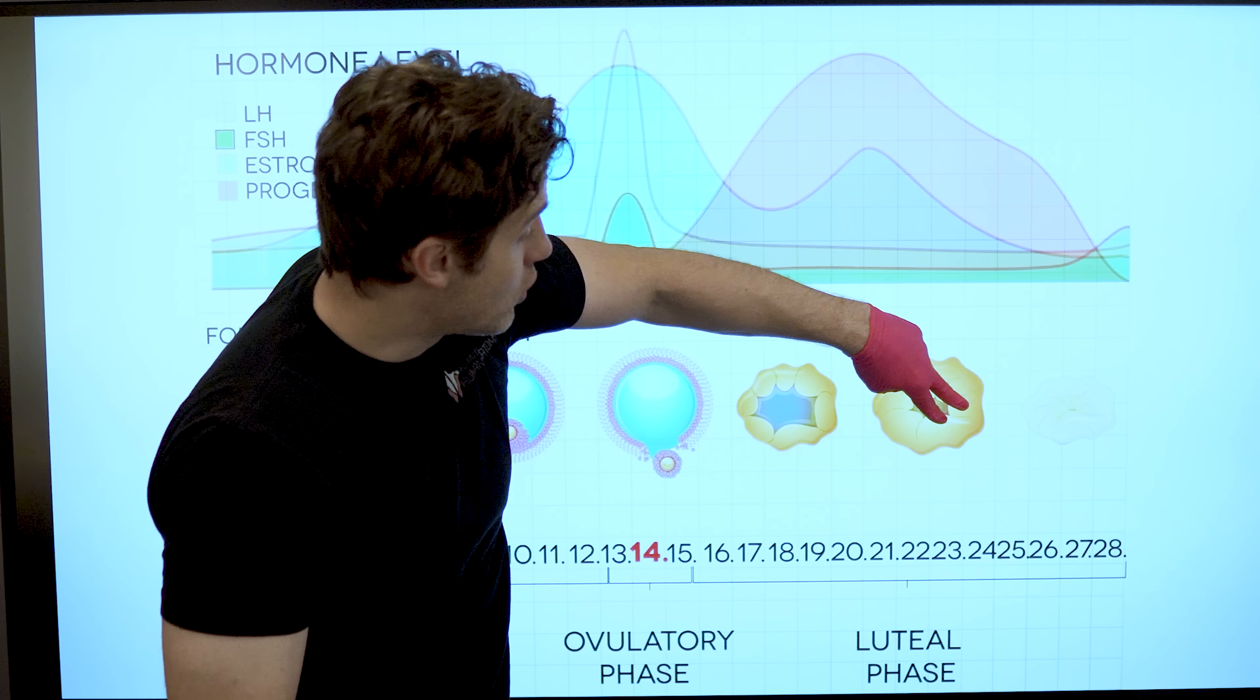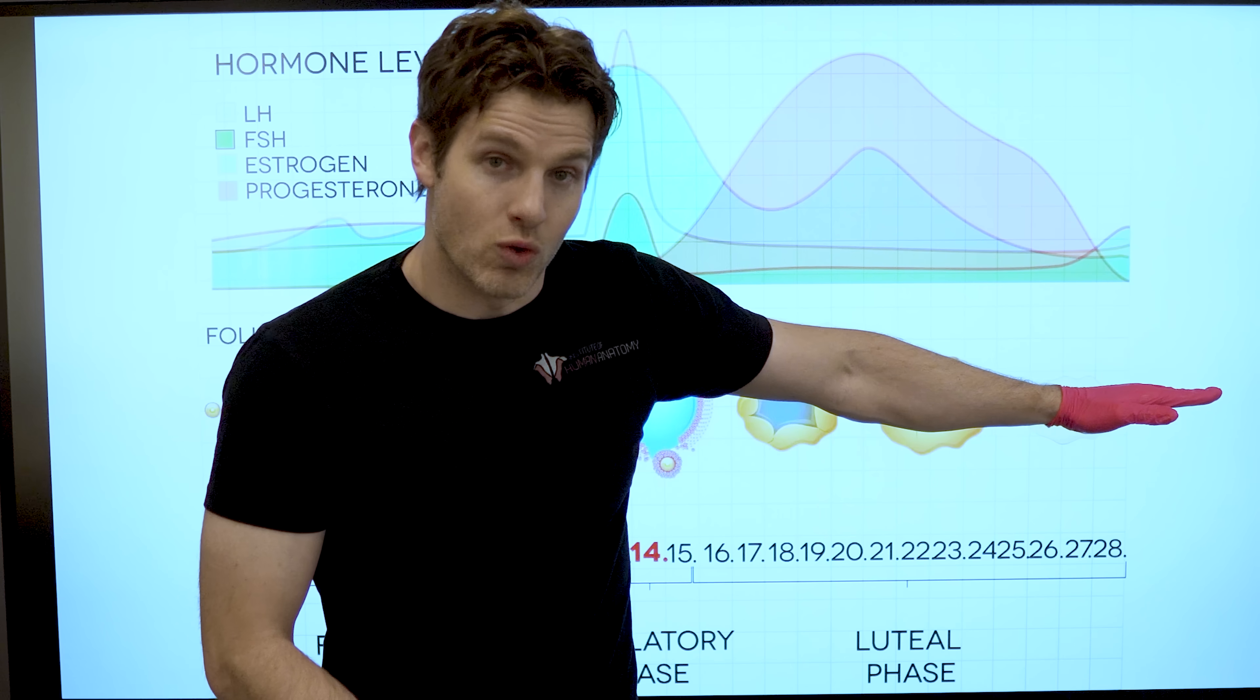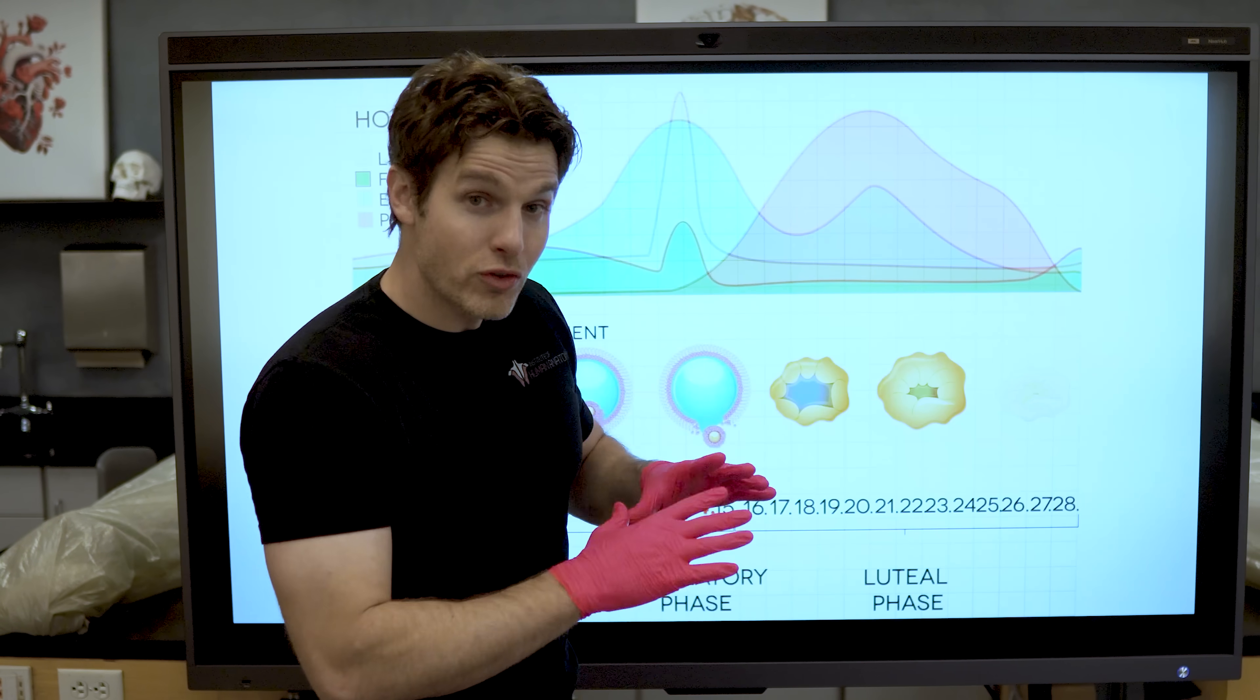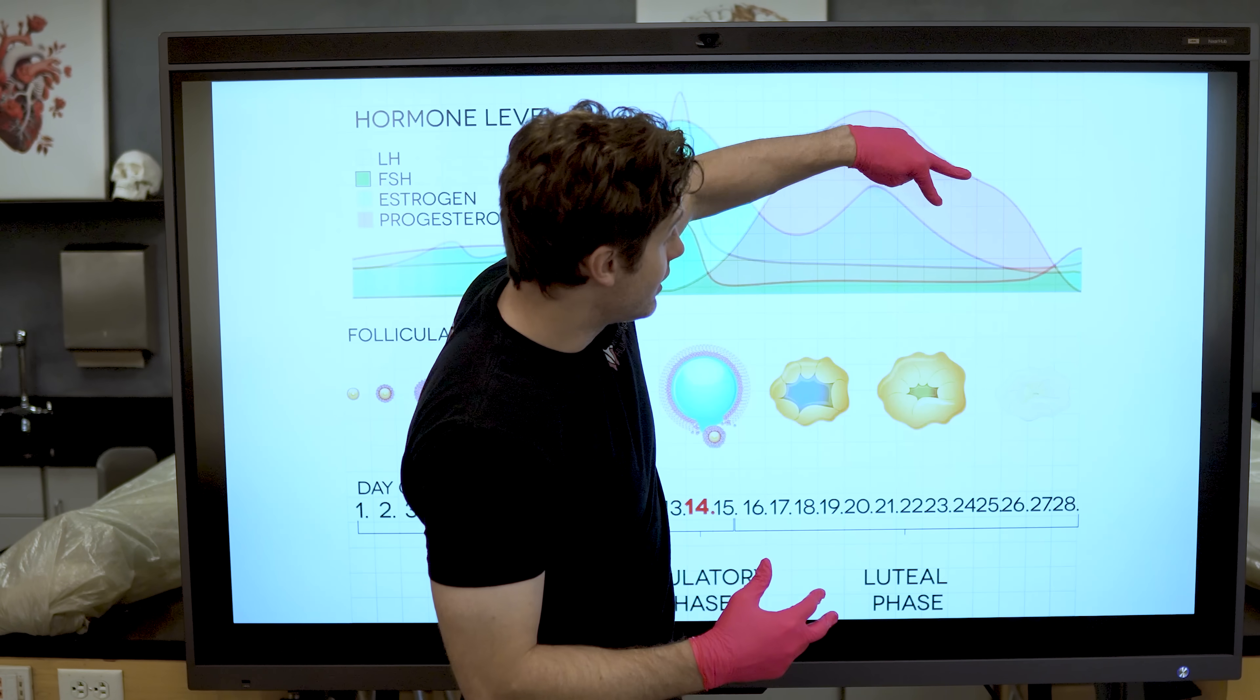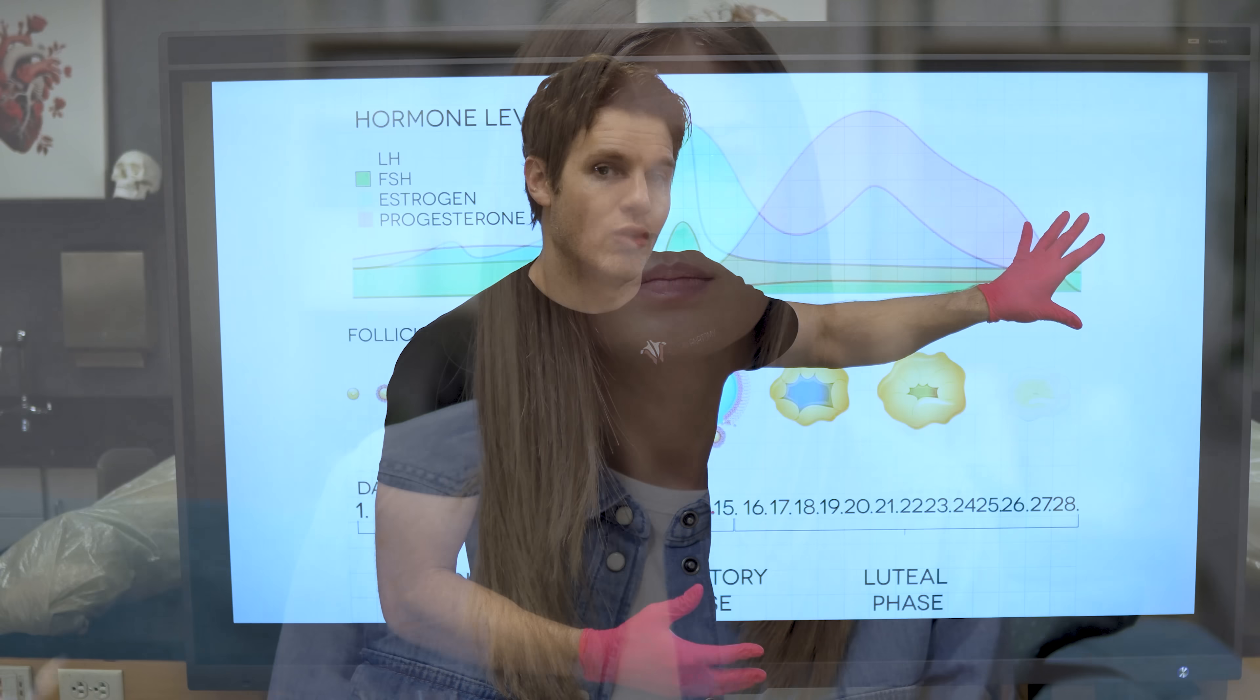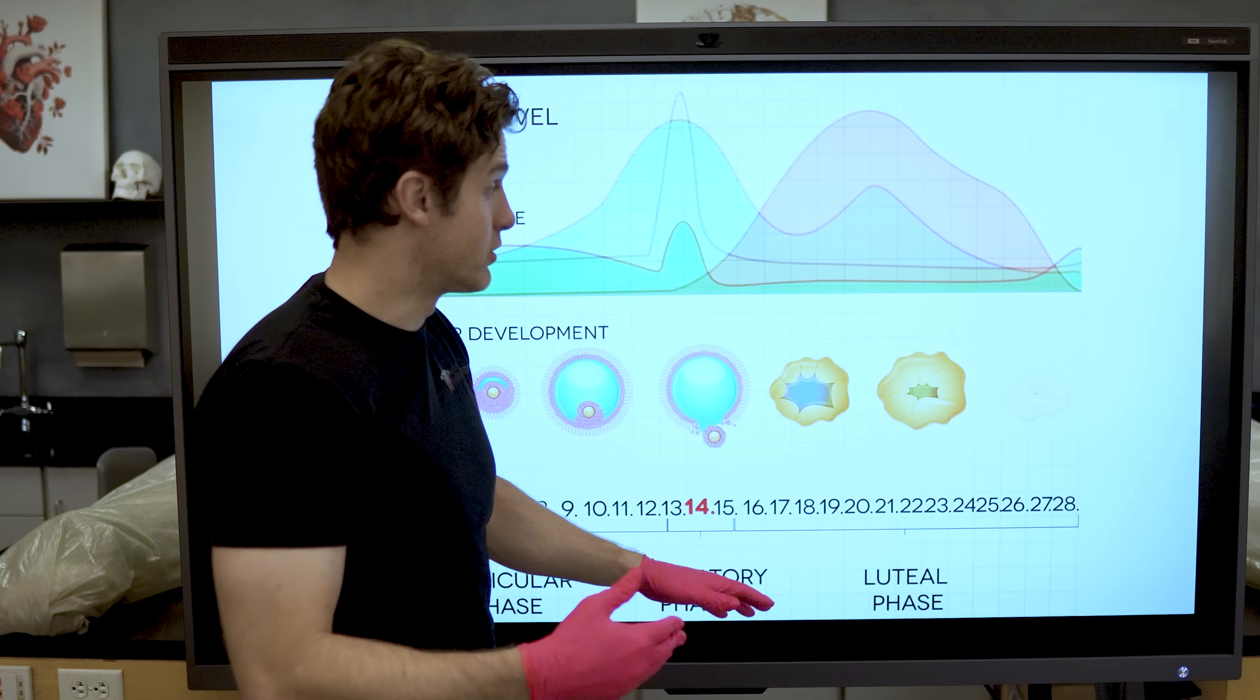And because it degrades, it's no longer secreting that progesterone and estrogen. Look at this huge dramatic decrease in those two hormones. Many of you have likely heard of premenstrual syndrome. And hormones are a very powerful thing. They influence multiple physiological processes and also our moods, our behavior. And if the hormones just dive down that dramatically and that quickly, it's no wonder that people can have feelings and emotions and not feel as good. This is the physiological answer for why some people will experience premenstrual syndrome.